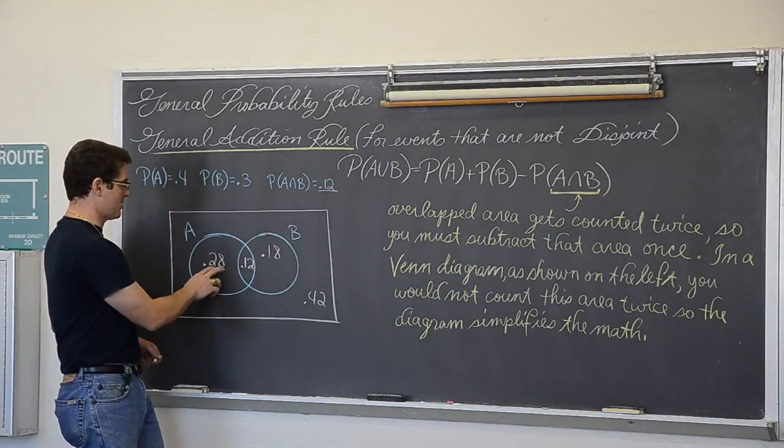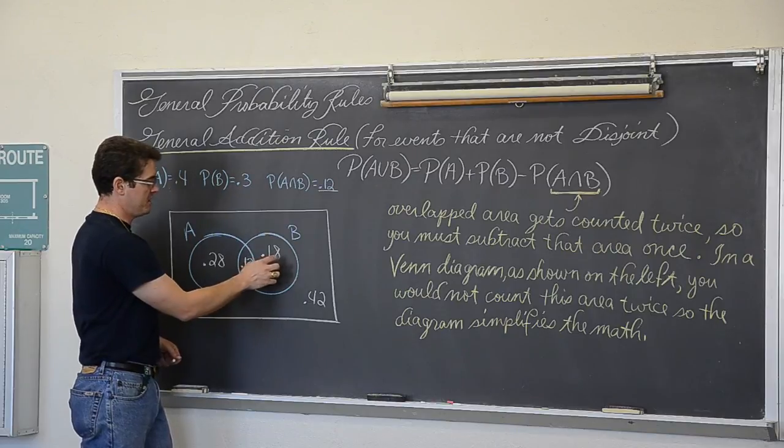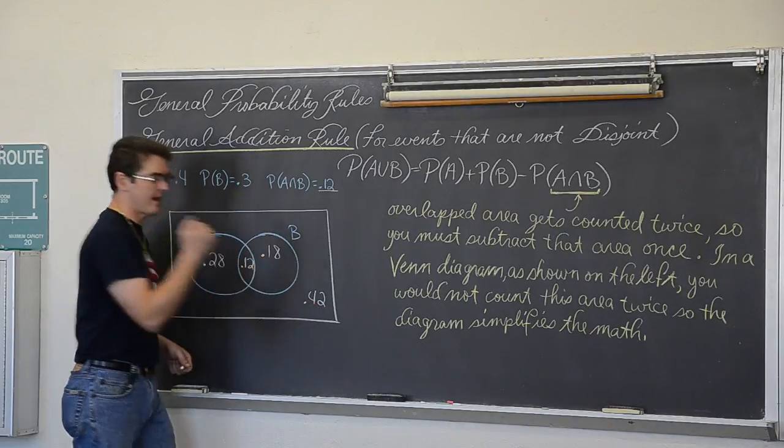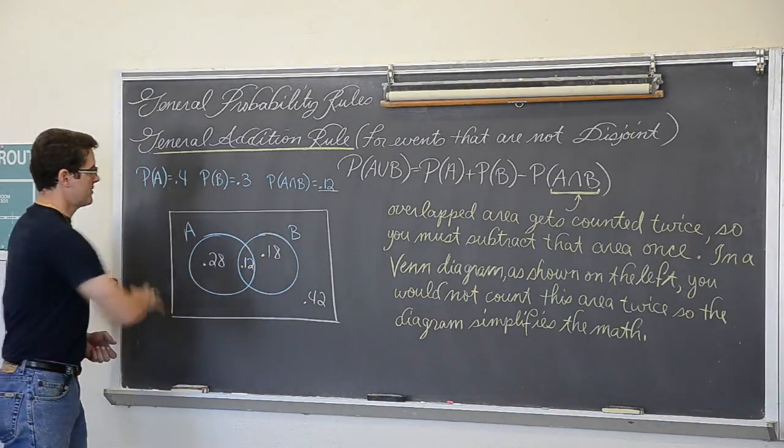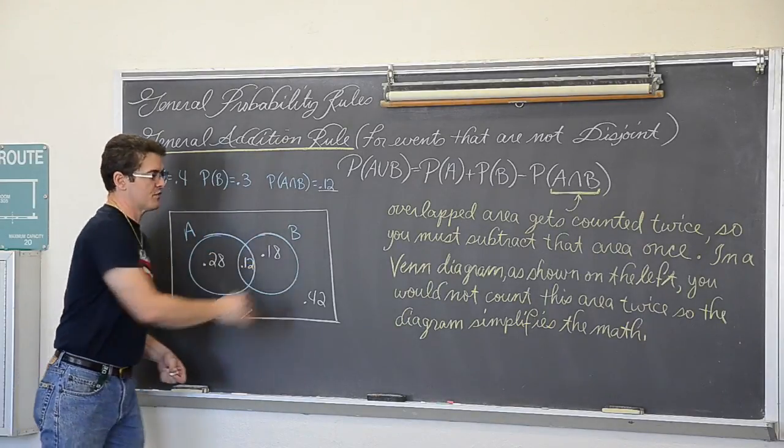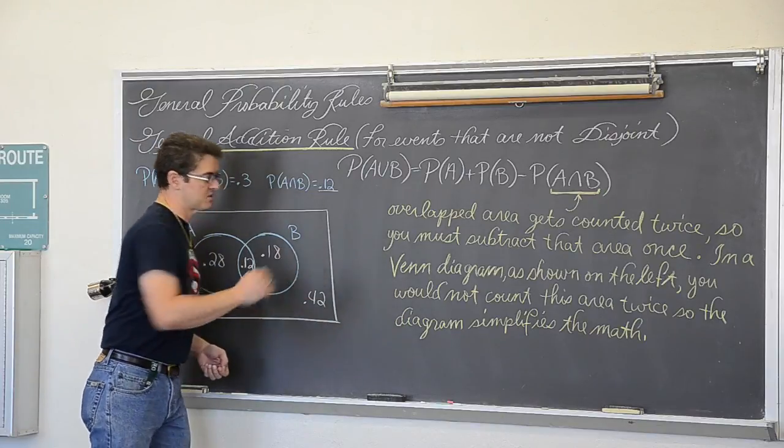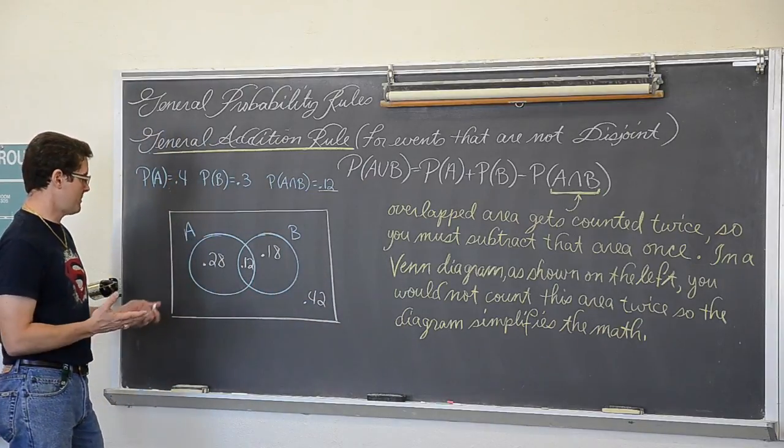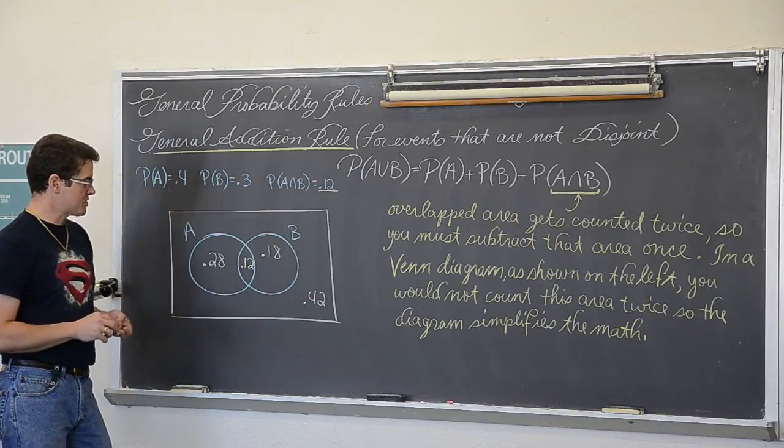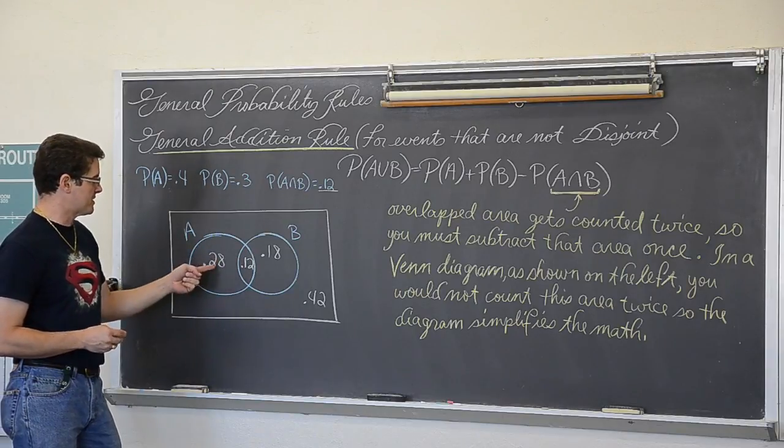So outside those circles, 1 minus 0.58 is 0.42. Right? Let me just double check that. 28, 38, 40, 50, 58, 60, and 1. Good. So now we have probabilities all over this Venn diagram and I can answer a lot of questions.